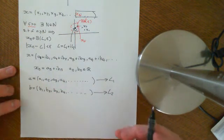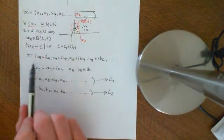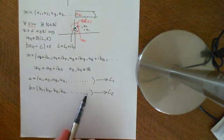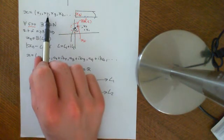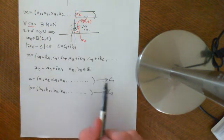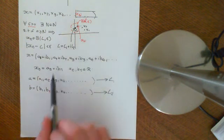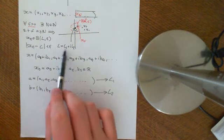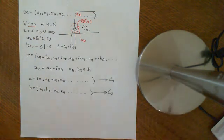Basically, if we have this sequence of complex numbers, we can split it into two sequences: a sequence of the real parts and a sequence of the imaginary parts. If we want to know what this sequence converges to in the complex plane, we can take the limit of the sequence of real numbers to get the real part of the limit, and the limit of the sequence of imaginary parts to get the imaginary part of the limit, then add those together to get the overall limit. In the next video we will prove this result.